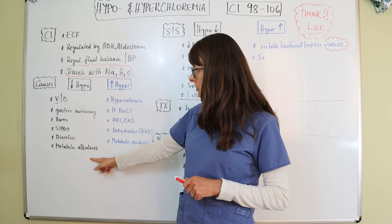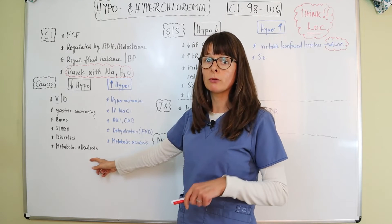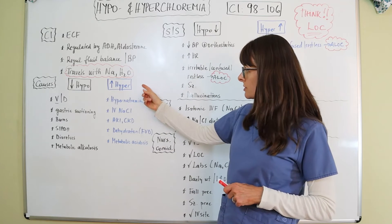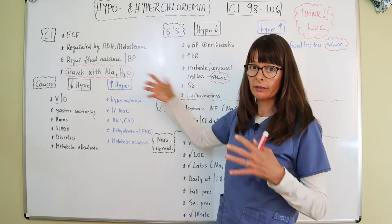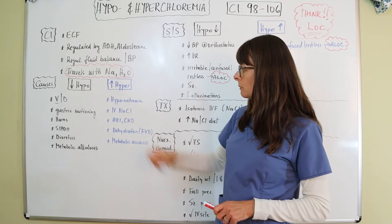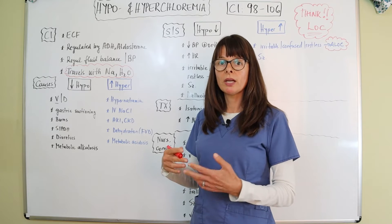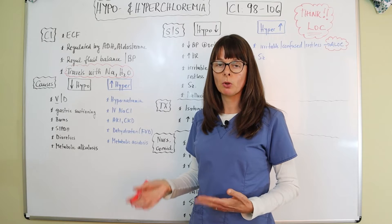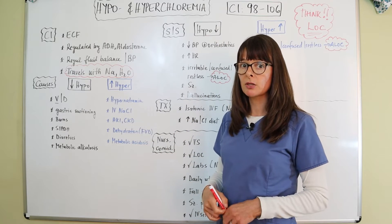Metabolic alkalosis can also cause chloride levels to drop. For hyperchloremia, causes include hypernatremia — as we said, they always travel together — and too much administration of sodium chloride. You might think sodium chloride is an isotonic fluid and we can never give too much, but yes, you can give too much sodium chloride, and the chloride levels will be too high and the patient might start to develop symptoms.